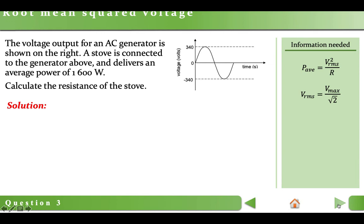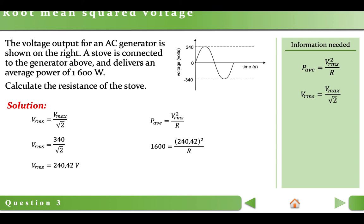Question 3: The voltage output for an AC generator is shown on the right. A stove connected to the generator delivers an average power of 1600 W. Calculate the resistance of the stove. We are provided with average power, so we need RMS voltage. RMS voltage is √2 times smaller than maximum voltage. We get the maximum voltage from the graph — it is 340 V. So RMS voltage equals 340 divided by √2, which equals 240.42 V. Using the power formula: 1600 equals (240.42)² divided by resistance. Therefore resistance equals 36.13 ohms.